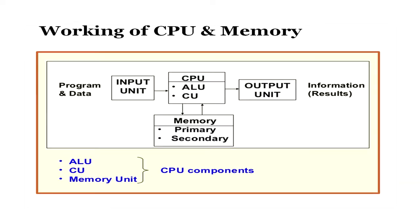This slide shows the basic working of the CPU and memory. As seen in the block diagram, through the input unit, programs and data are accepted. The CPU accepts that data with the help of its components — the control unit, ALU, and memory — processes and stores it, and finally, as instructed by the user, directs the data to output devices for the user to view the results. This block diagram sums up the entire working of the computer along with memory, input devices, and output devices.